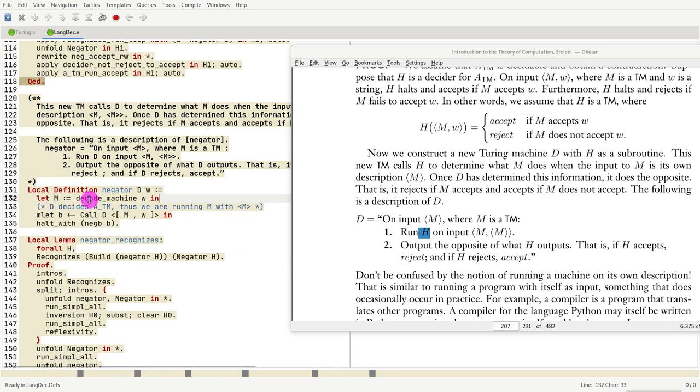First thing you need to note is that we have to make explicit that encoding and decoding of code. So here we have some input that is the encoding of M. We have to make explicit the conversion from this input to the machine, so we have this special function called decode_machine that takes an input and parses that machine. So this is M, the Turing machine that comes from parsing the input W.